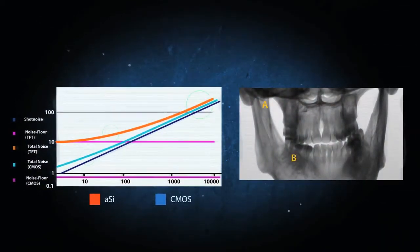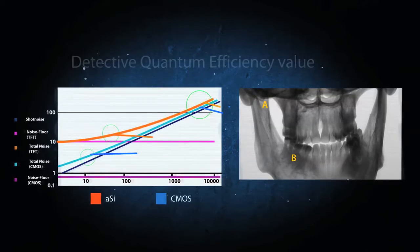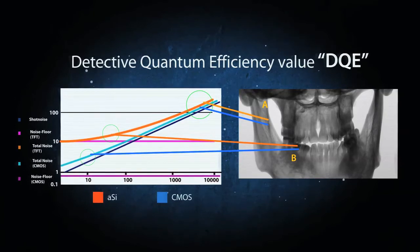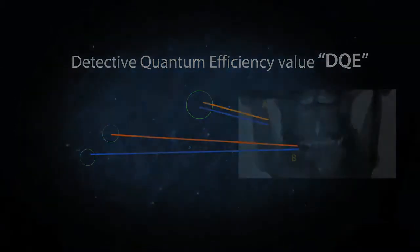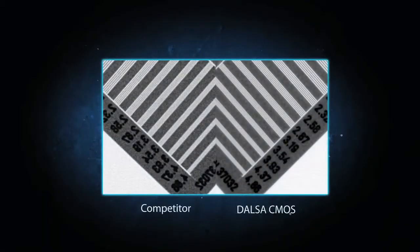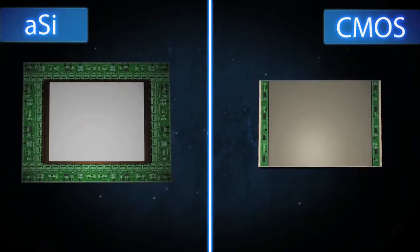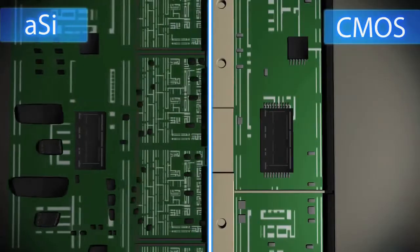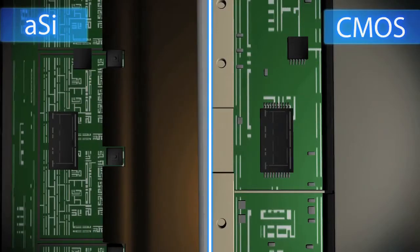X-ray detector performance is measured by a detective quantum efficiency value or DQE. At low dose, you can see the difference both in the DQE graph and in the images. Another advantage of our CMOS detectors over amorphous silicon is our ability to combine the detector and processing electronics on the silicon.